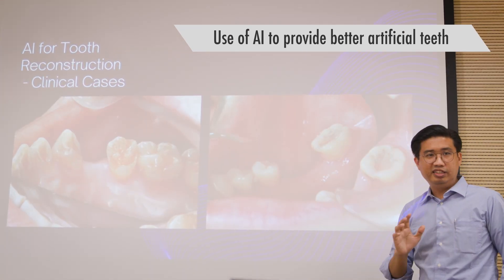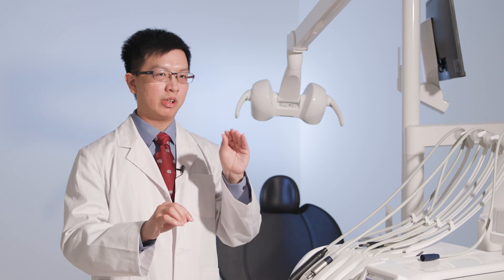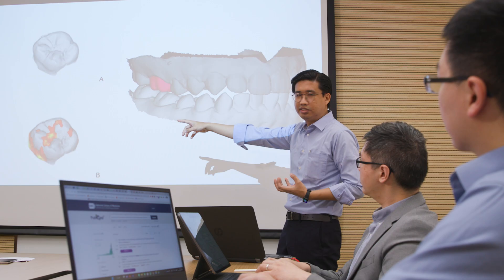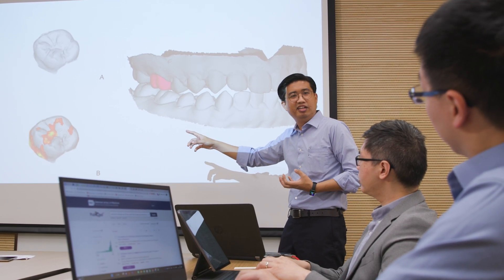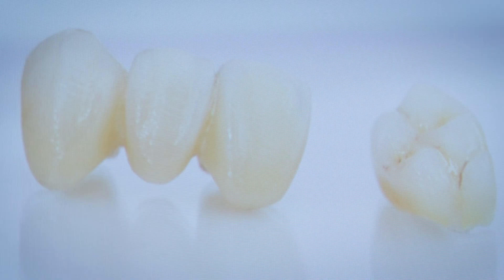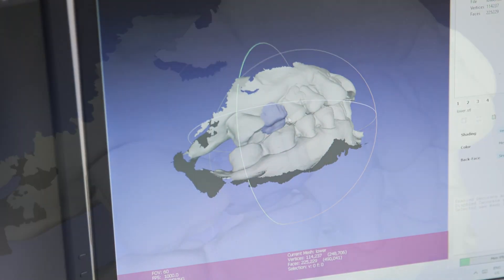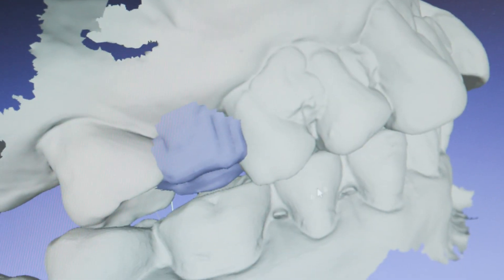The tooth-designing AI studies the remaining teeth in the mouth, finds hidden patterns, and determines what the original tooth looked like. The AI will then generate a false tooth that looks just like the original one, and ideally it can be placed in the patient's mouth without much adjustment.